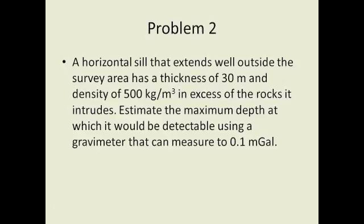So these are several corrections that you need to make to the data. So to give you a chance calculating, a horizontal sill that extends well outside the survey area has a thickness of 30 meters and a density of 500 kilograms per meter cubed in excess of the rocks it intrudes. Estimate the maximum depth at which it would be detectable using a gravimeter that can measure to 0.1 milligal.